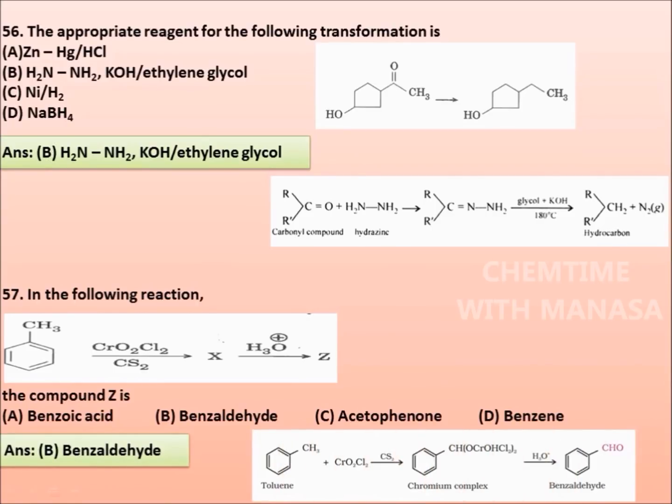We can see the actual reaction. Friends, toluene when reacts with chromyl chloride, we get a chromium complex, which on hydrolysis gives benzaldehyde. So option B is the correct answer.